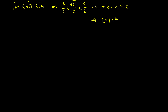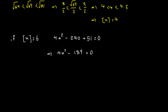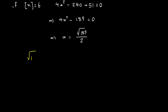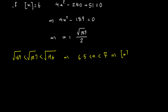Assume floor of x equals 6. We have 4x squared minus 240 plus 51 equals 0, giving 4x squared minus 189 equals 0, so x equals √189 over 2. To check: √189 lies between √169 and √196, which are 13 and 14, so x lies between 6.5 and 7. Therefore floor of x equals 6, which matches — this is a valid solution.